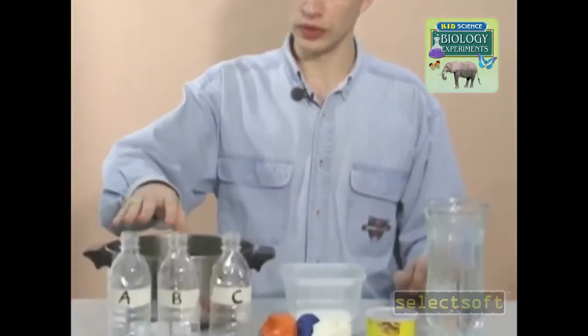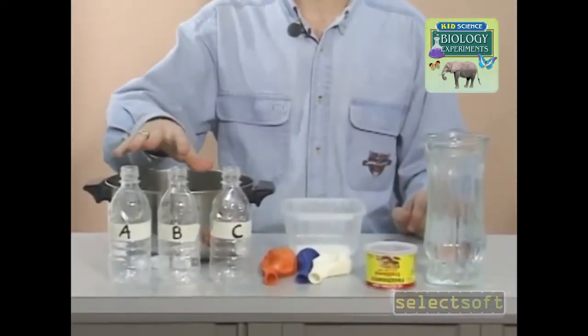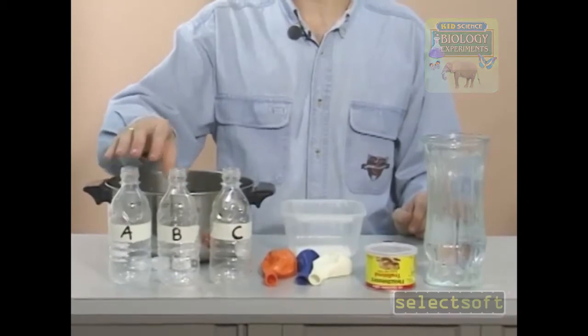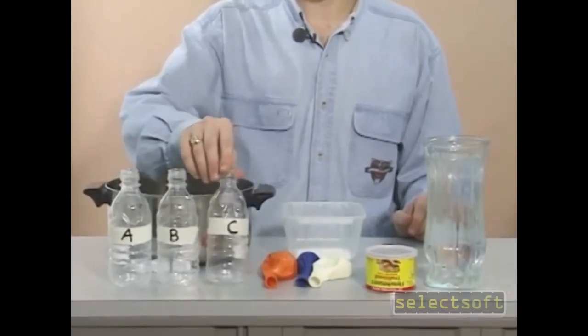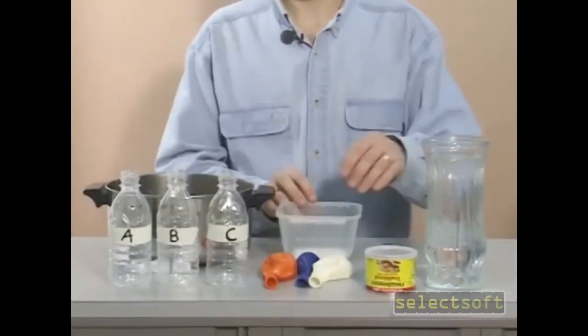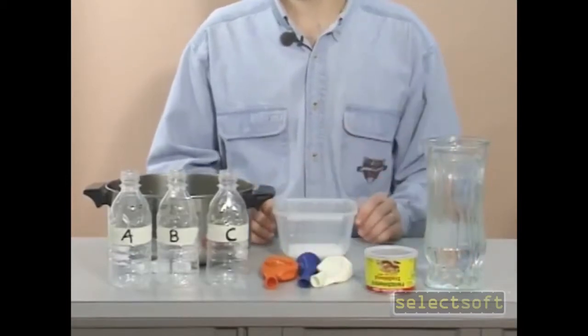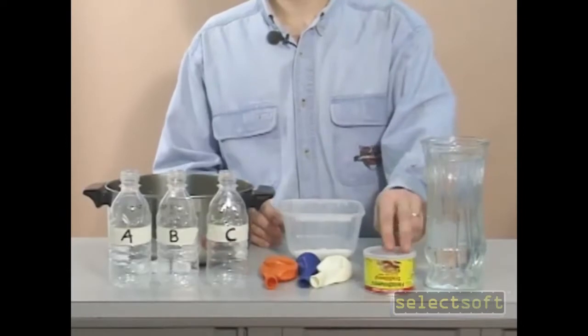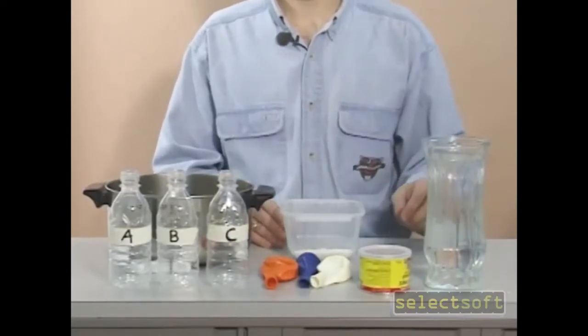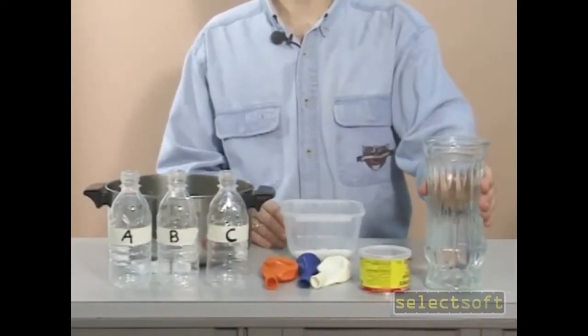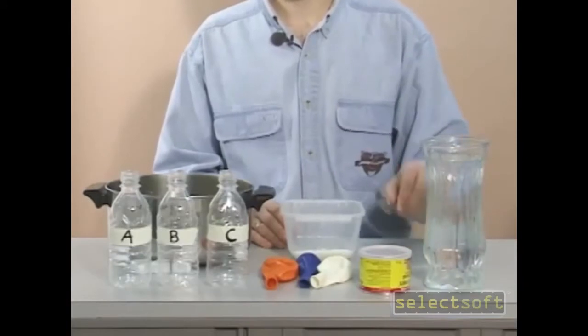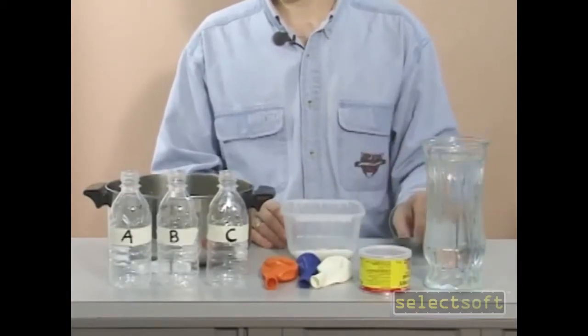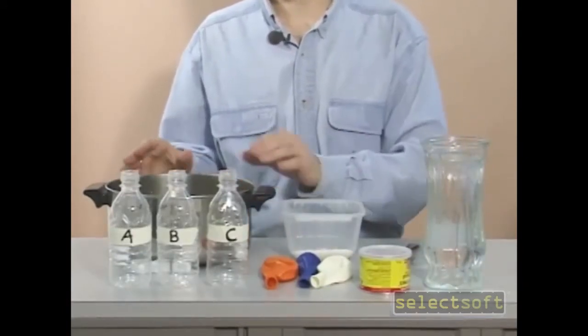For this, we'll need three bottles with lids labeled A, B, and C. We'll need three balloons, some sugar, some yeast, a large container of water, a tablespoon, and a sink or a container to work in.